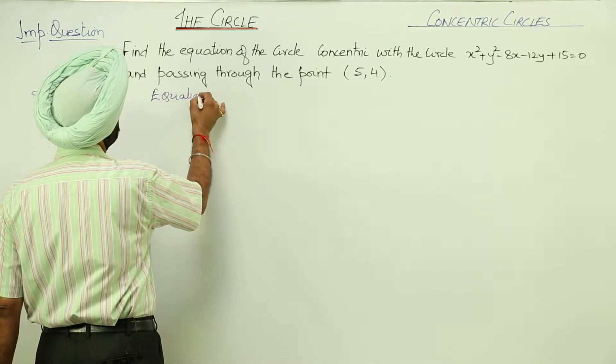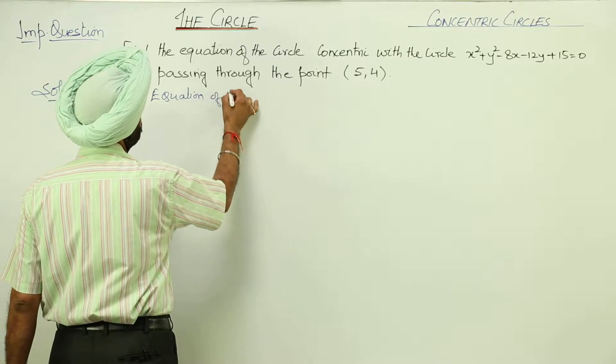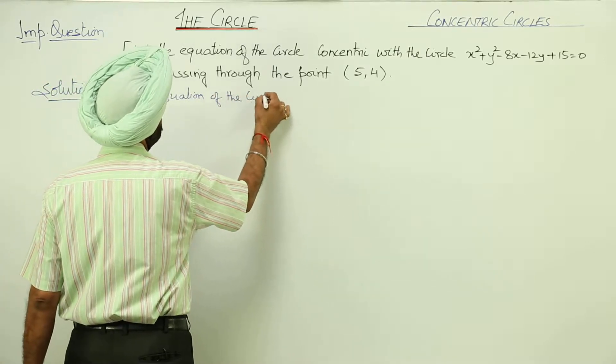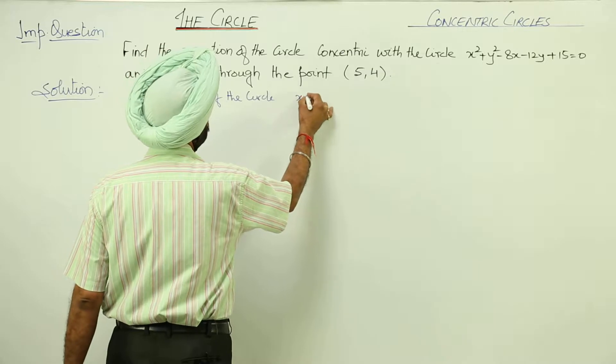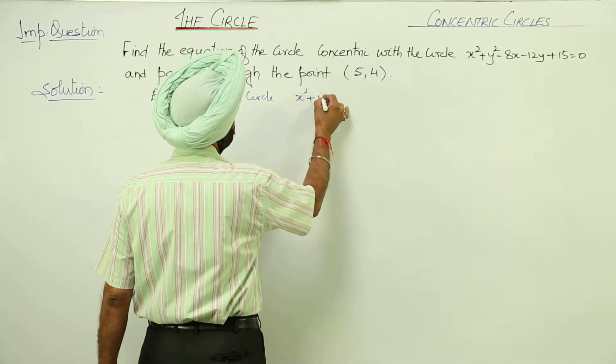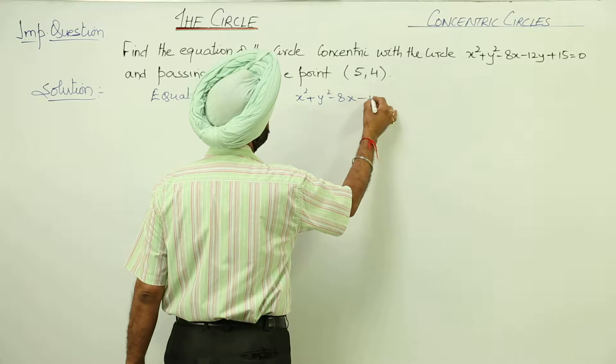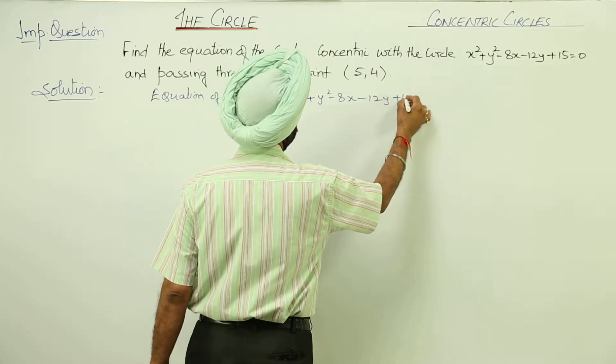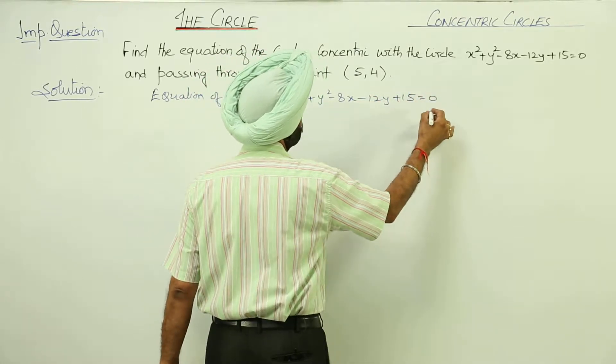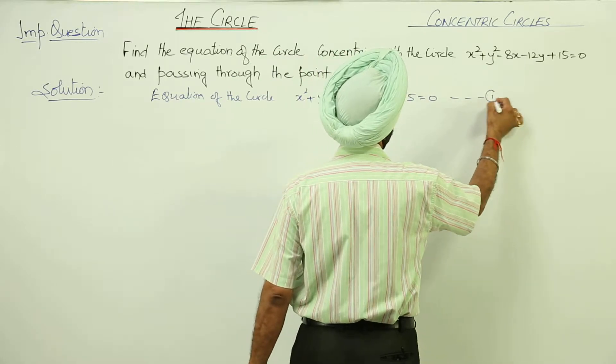Equation of the circle is given as x² + y² - 8x - 12y + 15 = 0. Let this be equation 1.